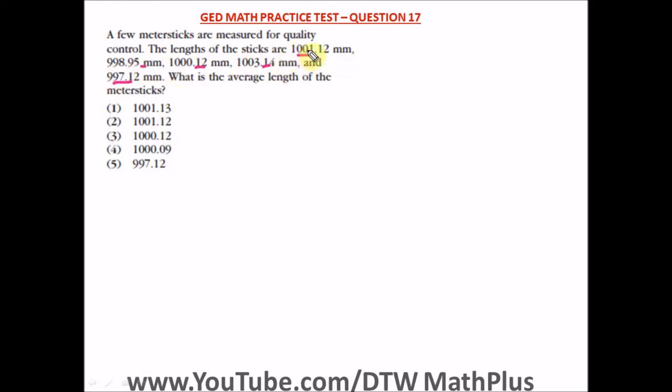All you need to do to find the average length is just add up all these lengths and divide by what's total? 5, divide by 5.